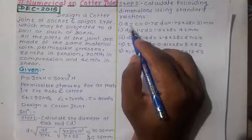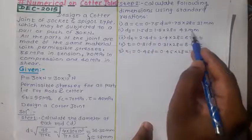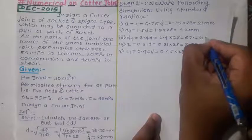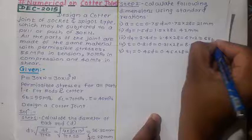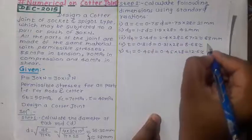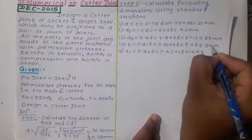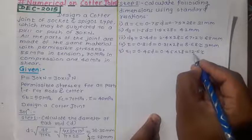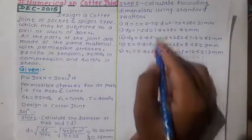After substituting d = 28 mm into all five standard relations, the results are: a = c = 21 mm, d3 = 42 mm, d4 = 67.2 mm → rounded to 68 mm, t = 8.68 mm → rounded to 9 mm, and t1 = 12.6 mm → rounded to 13 mm.